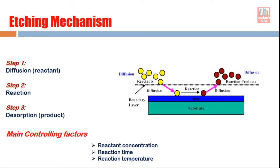We discussed the etching mechanism. First, reactants diffuse and reach the surface of the material. At the surface, in step two, chemical reactions take place. The products of those reactions must then leave the surface. These three steps decide the speed or rate of reaction.